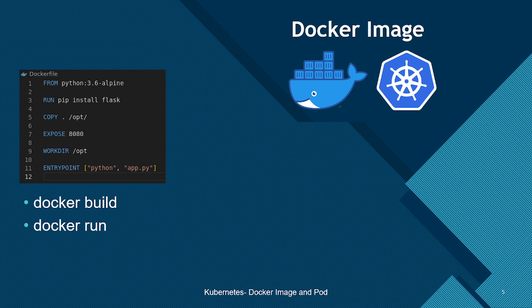Using this Dockerfile we will first create an image using the docker build command. This will create an image on our local machine. If you want to test the web application, we'll use the docker run command to create a container. This container will expose the application on port 8080 so we can test it on the local machine before creating Kubernetes resources.